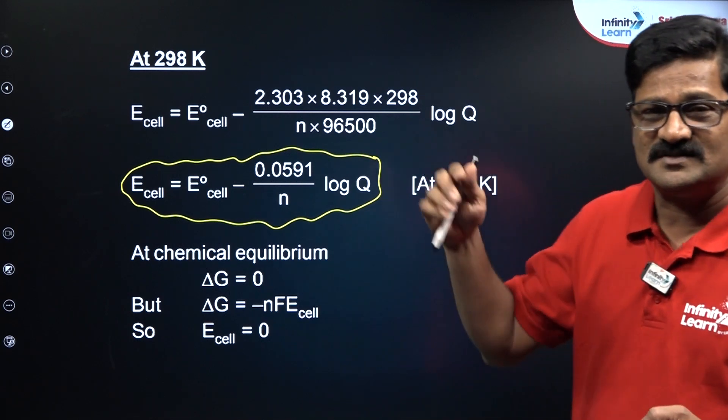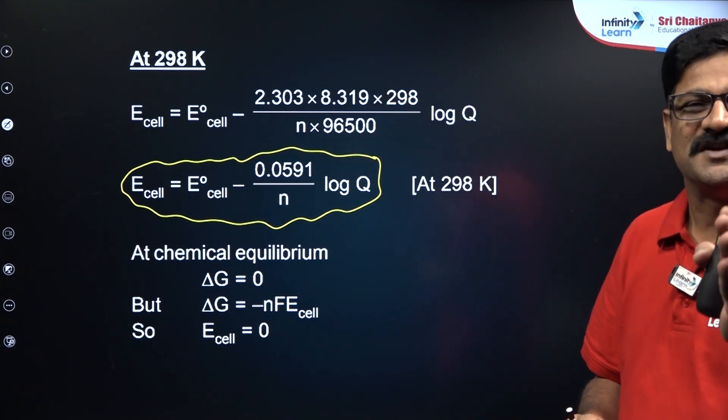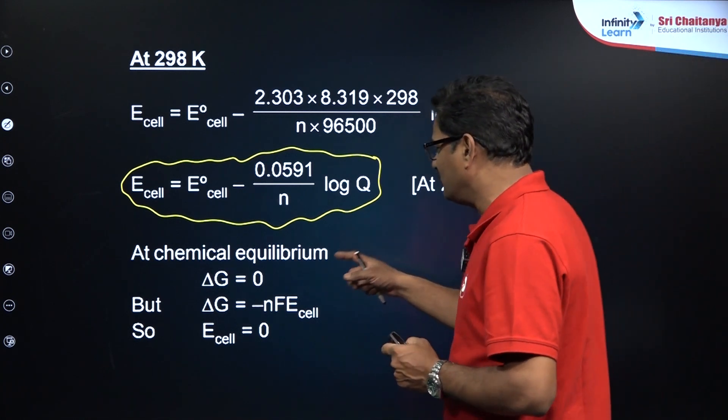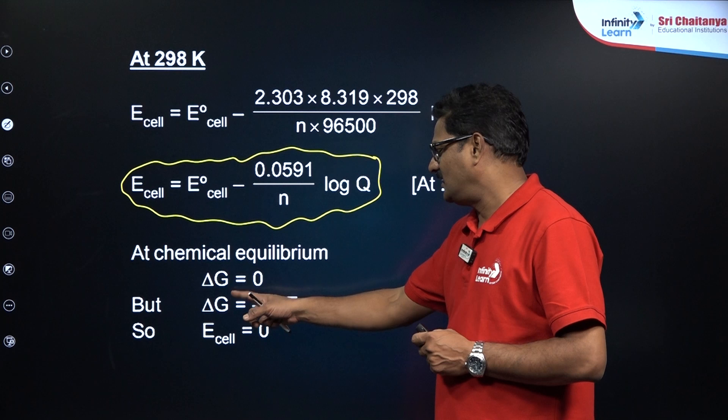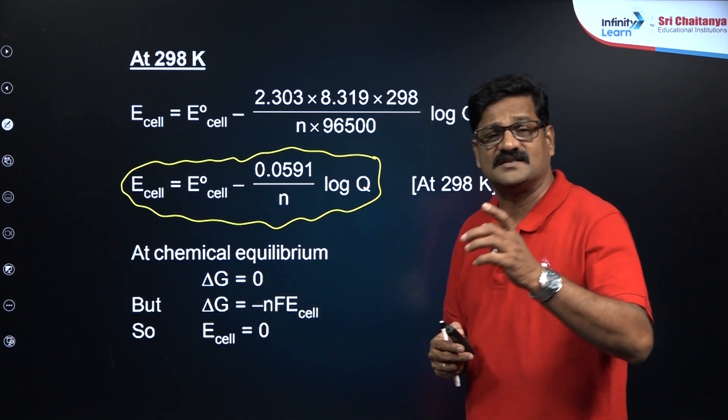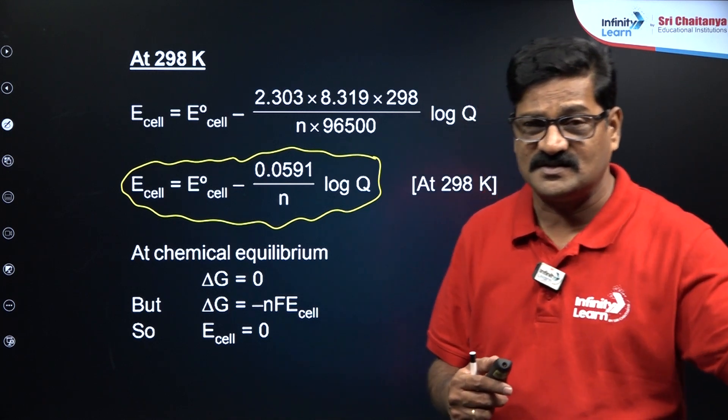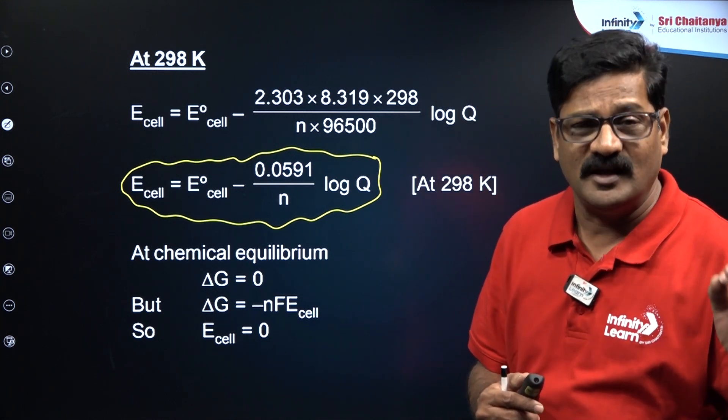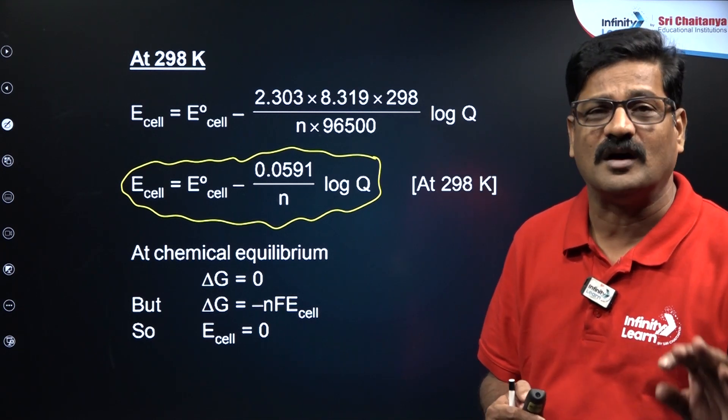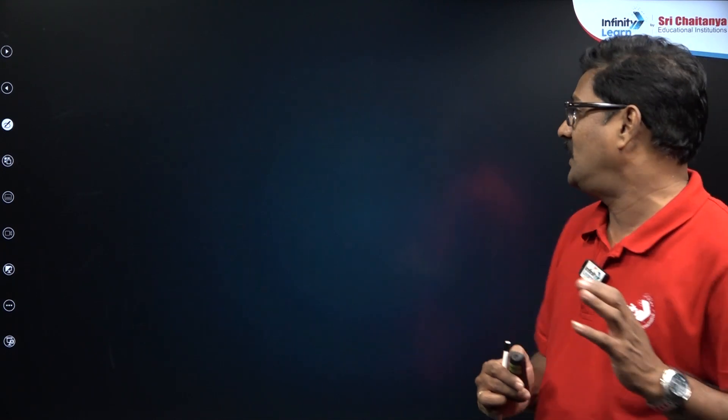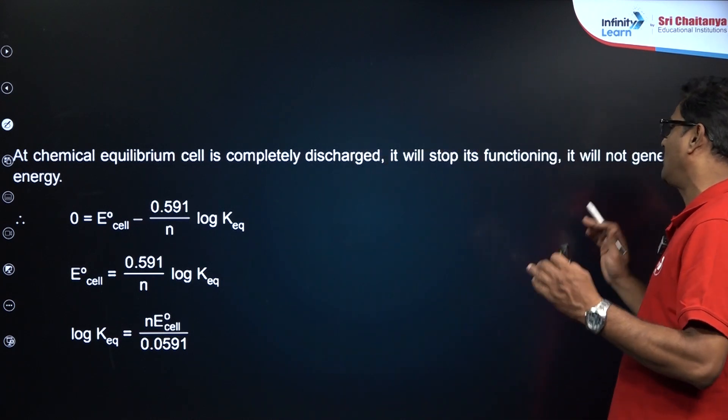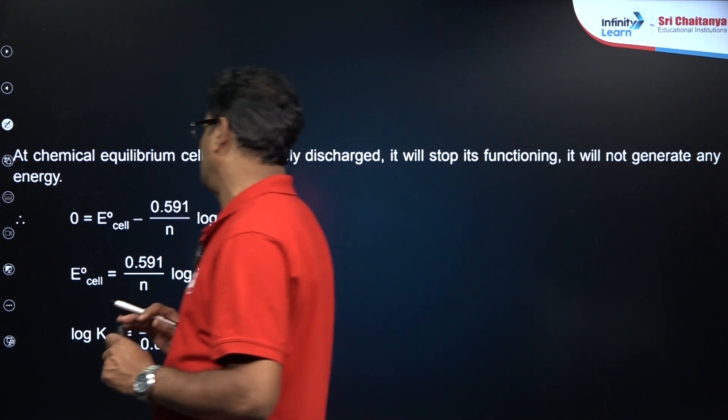The Nernst equation is actually derived from thermodynamics Gibbs free energy change, mind it. At equilibrium, delta G equals zero and E cell is going to be zero. If the cell is at the spontaneous, delta G is negative and EMF is going to be positive. At equilibrium, delta G and EMF both are going to be zero. At equilibrium, the cell is completely discharged. It will stop functioning and will not generate any energy.